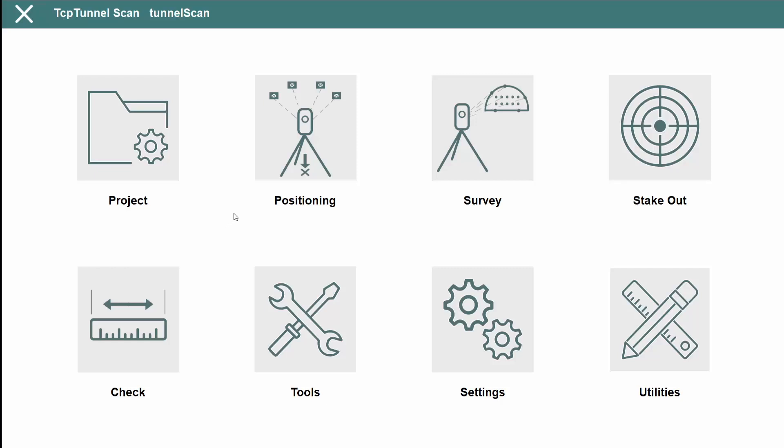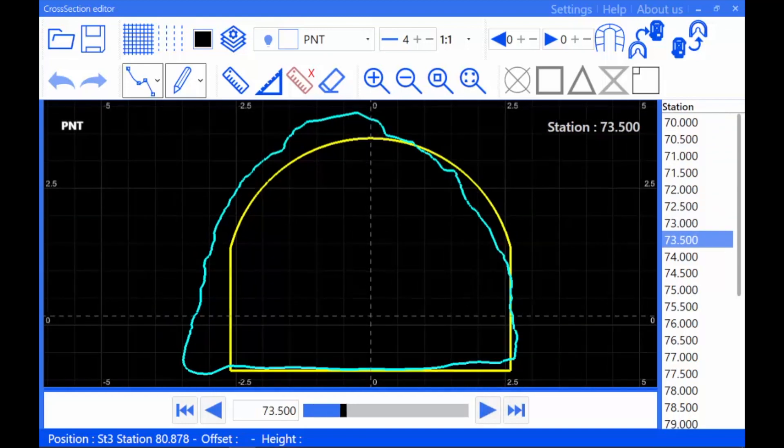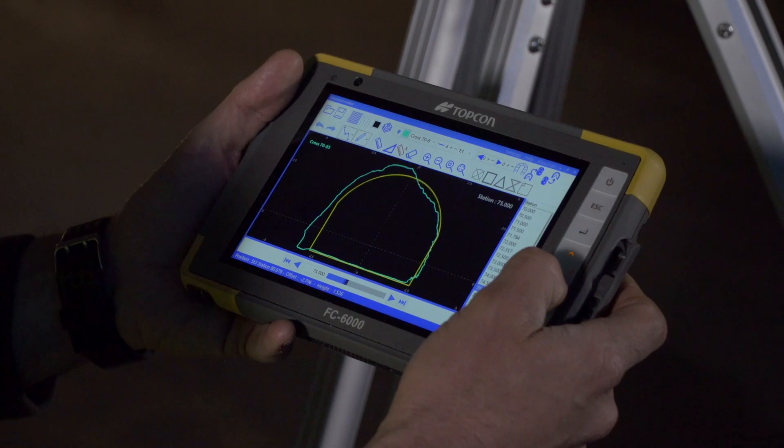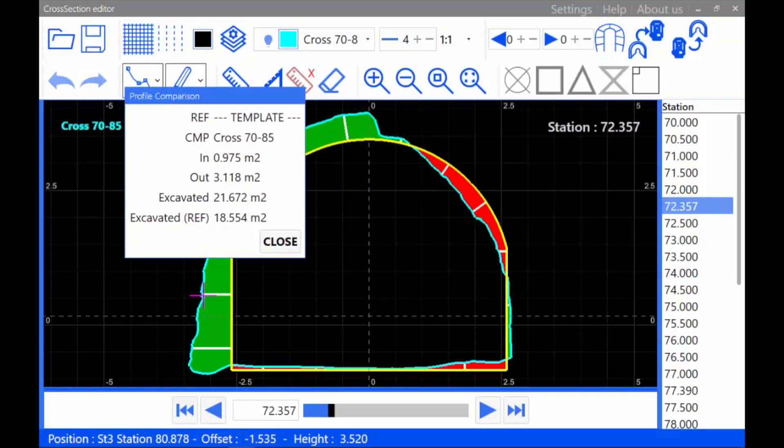High-definition tunnel cross-sections are quickly calculated from the point cloud, and they can be consulted, edited, and compared to the tunnel design, showing with different colors the under-break and over-break areas.